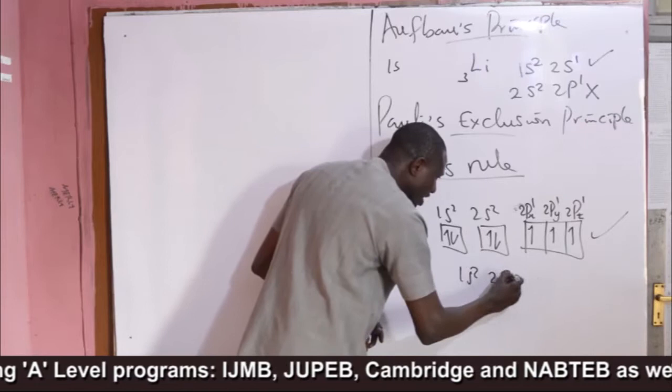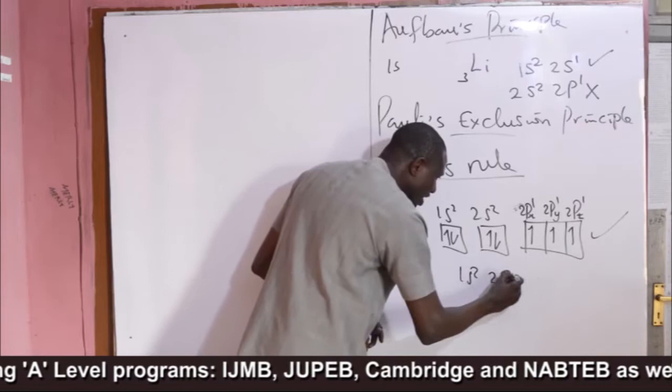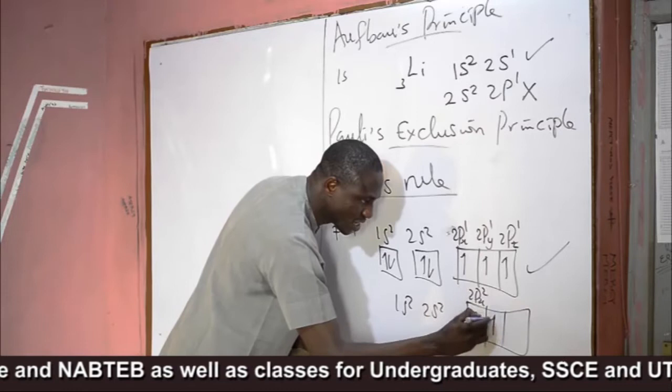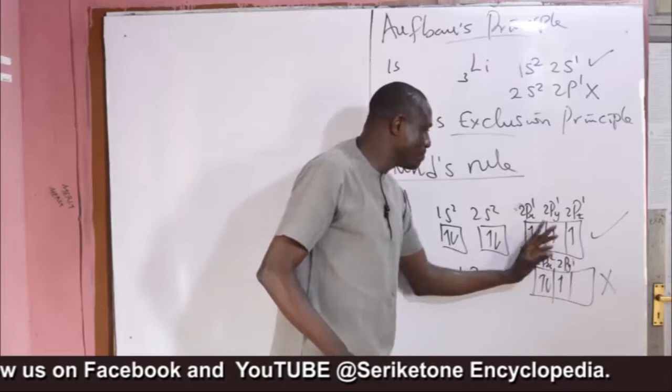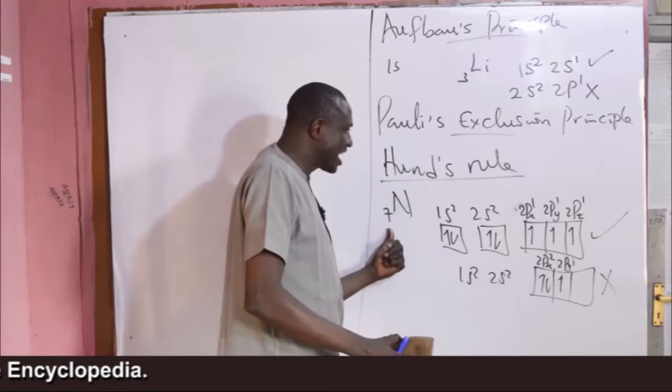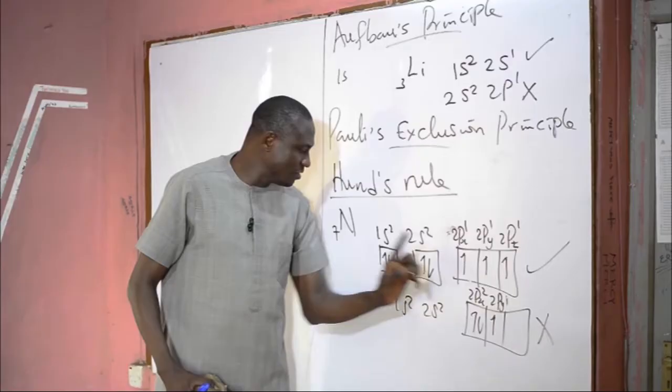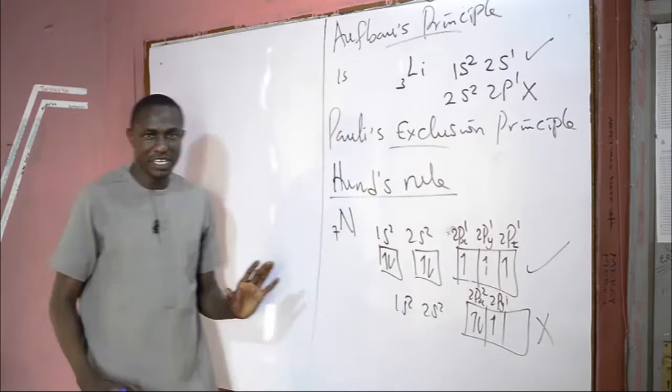Note that writing 1s2, 2s2, 2px2, 2py1 is wrong, because these three p orbitals have the same energy, and electrons must enter them one after the other before pairing occurs. So if you have additional electrons, as in the case of oxygen which has 8 electrons, the 8th electron will pair into 2px. If there are 9 electrons, the 9th electron will enter 2py and pair it, while 2pz remains singly occupied. That is Hund's rule.